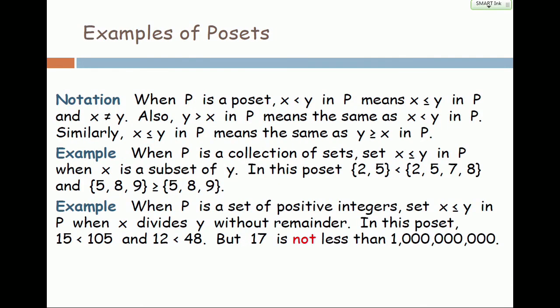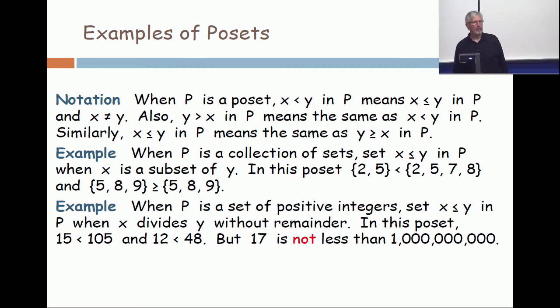All right, some additional notation. When you have a post-set and you say X is less than Y, all you mean is that X is less than or equal to Y. But now you have distinguished X and Y, and you're saying they are different. An absolutely obvious notation. You can write these symbols backwards. So when you say Y is bigger than X, you mean exactly the same thing as saying X is less than Y. And less equal can be reversed into greater than or equal to in an absolutely obvious way.